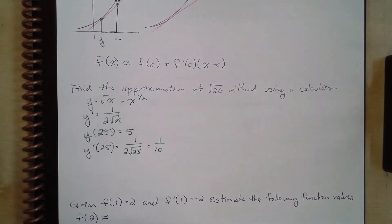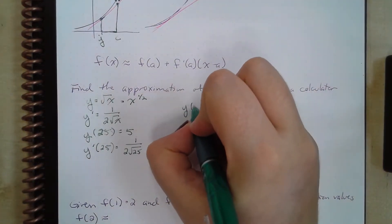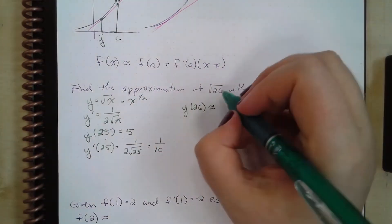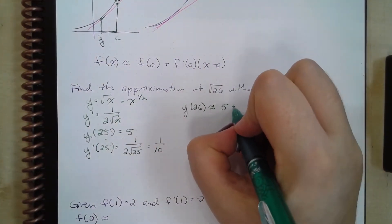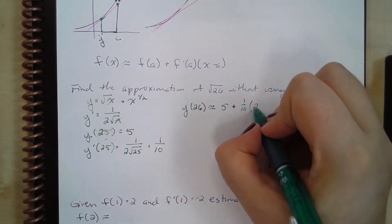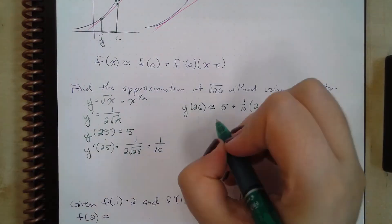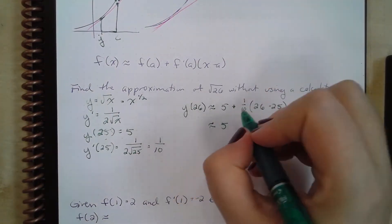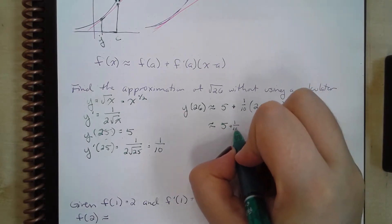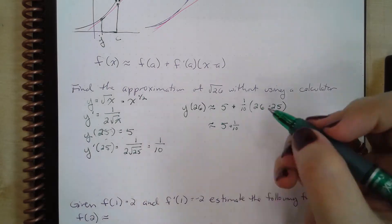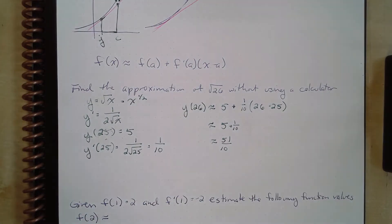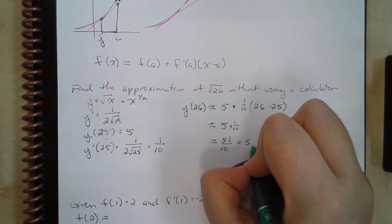So now we can actually approximate that value. y(26) is approximately y(25), which is 5, plus the derivative, 1 tenth, times 26 minus 25. So that's going to be 5 plus 1 tenth times 1, which is just 1 tenth. So it's 51 over 10, which is about 5.1.